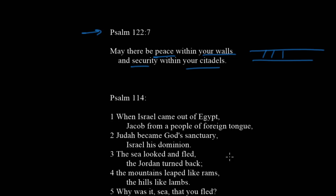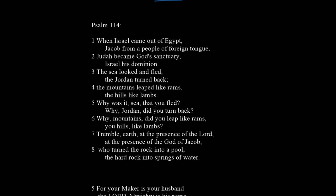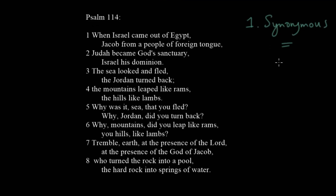The first type of parallelism Loth called synonymous — where the lines are equal to each other, they echo each other. A perfect example is Psalm 114. The entire psalm consists of synonymous parallelism; you can pause the video and read it carefully to hear this very unique effect of repetition. Verse 3 is a good example: 'The sea looked and fled, the Jordan turned back' — the lines are synonymous to each other. It's quite rare for an entire psalm to be like this, which makes it stand out all the more.